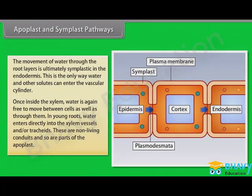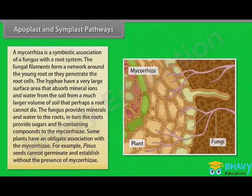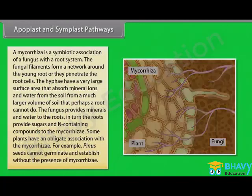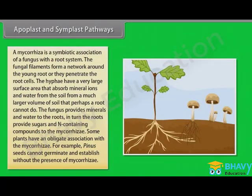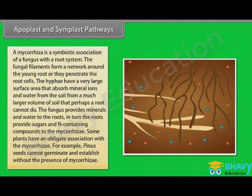Some plants have additional structures that help in water and mineral absorption. A mycorrhizae is a symbiotic association of a fungus with a root system. The fungal filaments form a network around the young root or penetrate the root cells. The hyphae have a very large surface area that absorbs mineral ions and water from a much larger volume of soil than a root alone can. The fungus provides minerals and water to the roots; in turn, the roots provide sugars and nitrogen-containing compounds to the mycorrhizae. Some plants have an obligate association with mycorrhizae — for example, pinus seeds cannot germinate and establish without the presence of mycorrhizae.